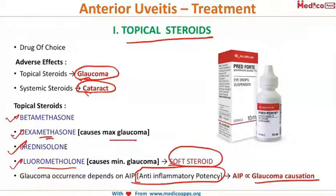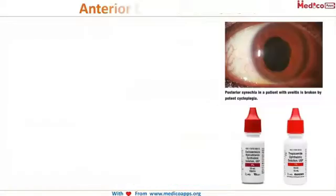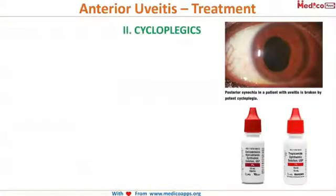Fluorometholone is the weakest steroid and causes the minimum glaucoma. It is therefore called the soft steroid.